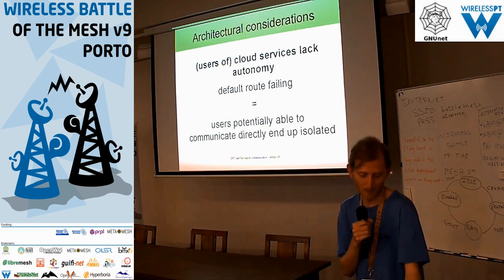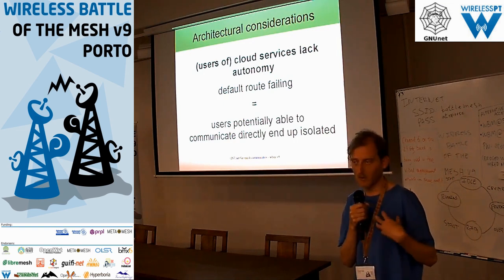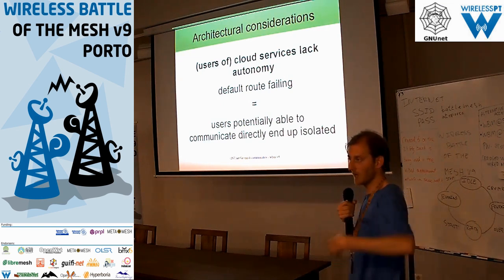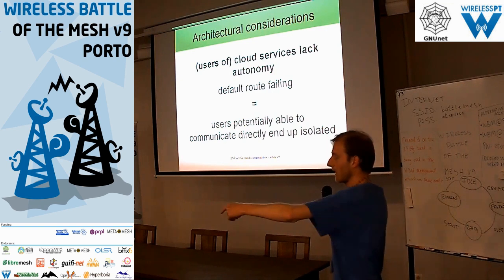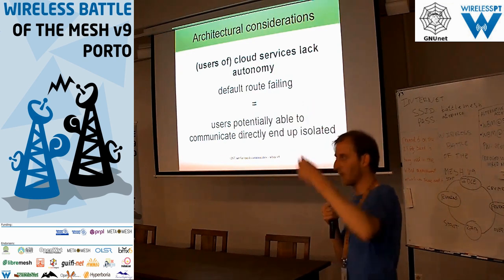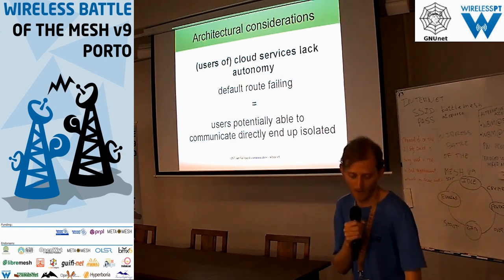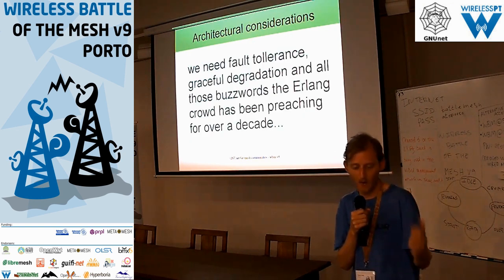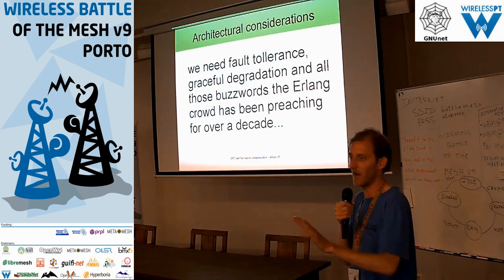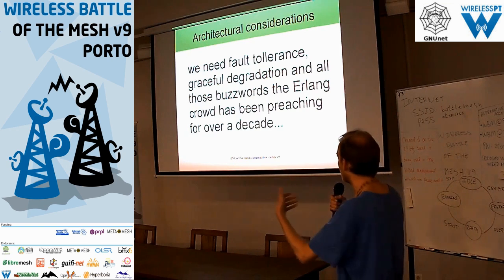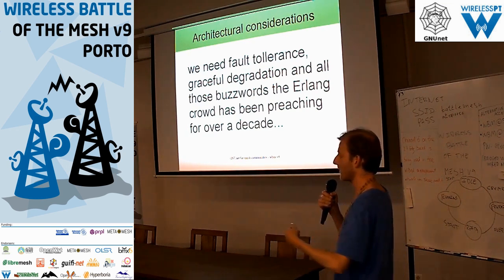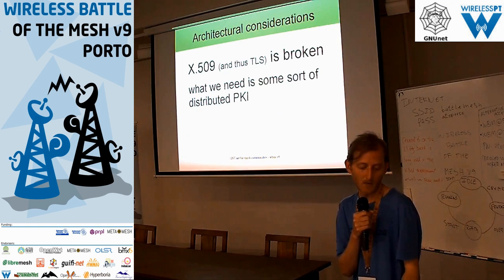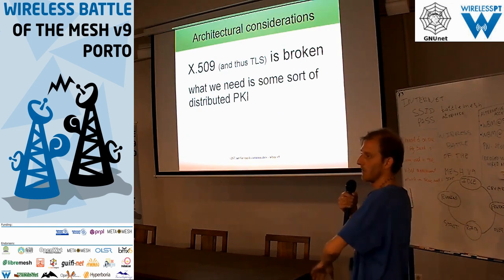The current reality is that we use Facebook to communicate with people next door. If the default route fails, even though I have a direct IP-level route to a neighbor, we can't chat on Facebook anymore — that's sad because we're missing out on something we could have. What we need is fault tolerance, graceful degradation — what the IETF crowd has been talking about for a long time — but I haven't seen delivery of that outside a very centrally managed domain.